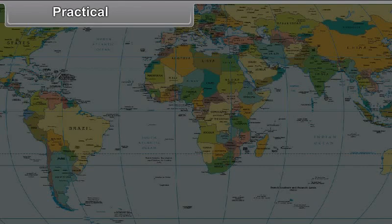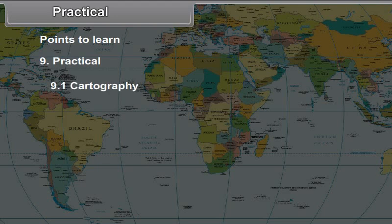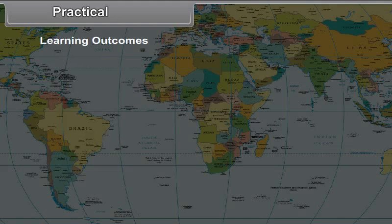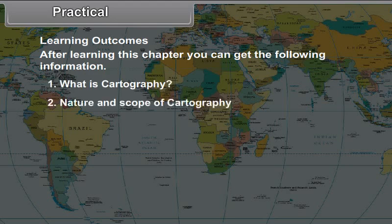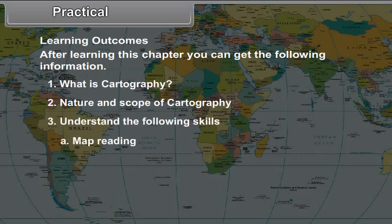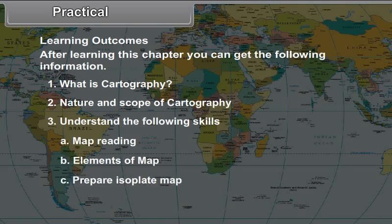Geography Standard 9, Chapter 9: Practical Points. Topics include 9.1 Cartography, 9.2 Maps, and 9.3 Field Study. After learning this chapter, you can understand what cartography is, its nature and scope, and develop skills such as map reading, understanding elements of a map, preparing isopleth maps, and collecting information using skill comprehension to make a presentation.